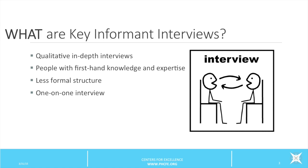What are key informant interviews? Key informant interviews are qualitative in-depth interviews of 15 to 35 people selected for their first-hand knowledge about a topic of interest. The interviews are loosely structured, relying on a list of issues to be discussed. These interviews resemble a conversation among acquaintances and are conducted one-on-one, either on the telephone or face-to-face.